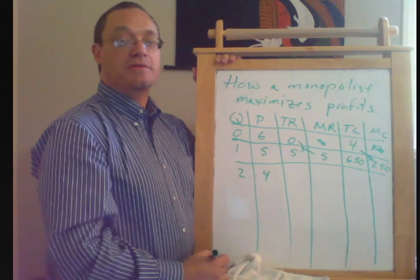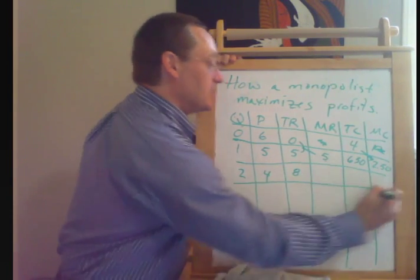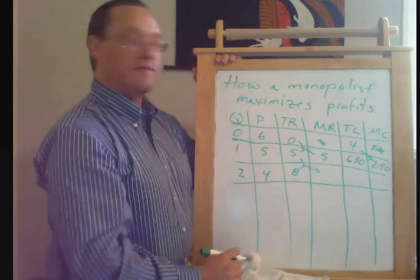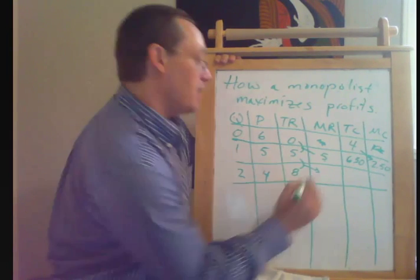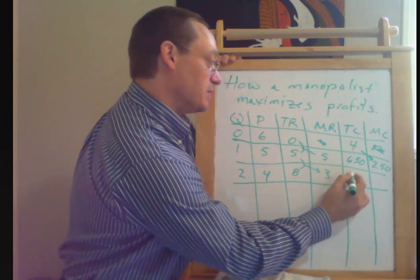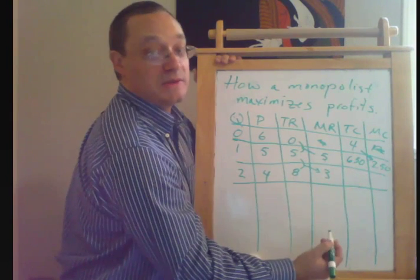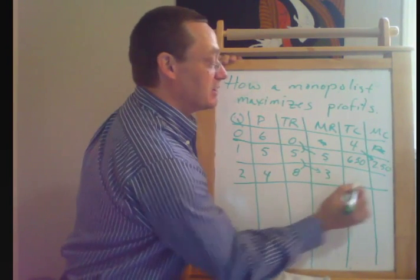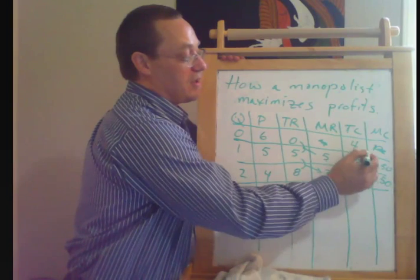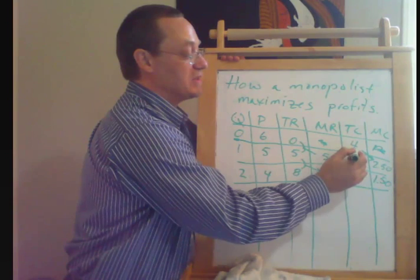If selling two units means that we have to cut our price to $4.00, then our total revenue of two units is $8.00. The marginal revenue of this second unit is $3.00. And let's suppose that this one has a lower marginal cost than the first one because we have some increasing returns for a while, let's suppose that it has $1.50 of marginal costs.